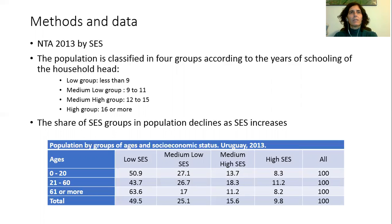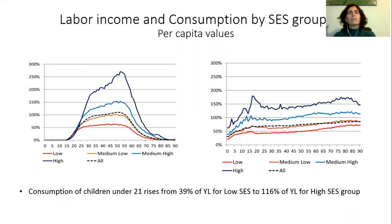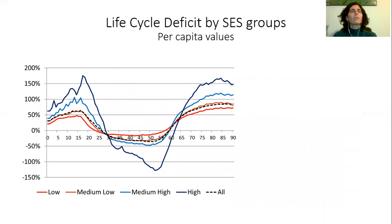This table shows that the share of CES groups in the population decreases with CES. Looking at the overall results of labor income and consumption by CES, these are the per capita age profiles as a percentage of the average labor income for ages 30 to 49. The average individual is the black dotted line. As expected, labor income and consumption increase with CES and the gap is higher for the former. On average, consumption of children under 21 represents 54% of average labor income. Consequently, the life cycle deficit rises with CES at childhood and all ages.